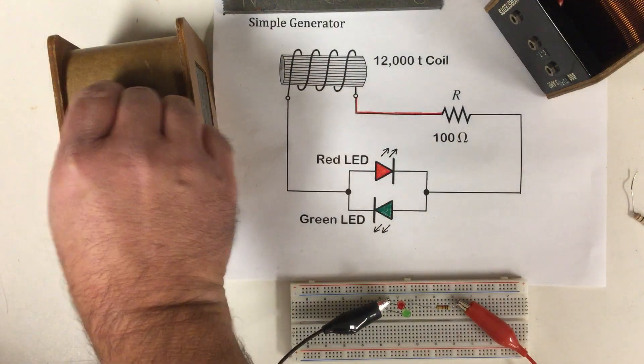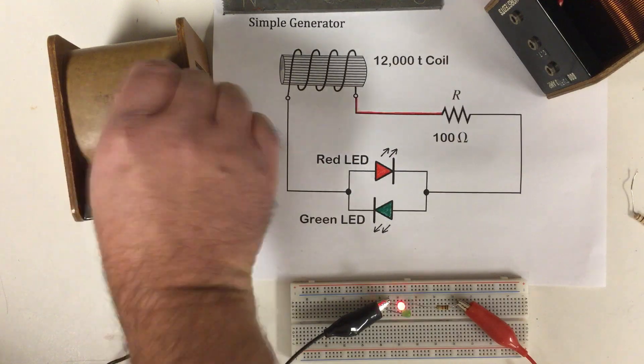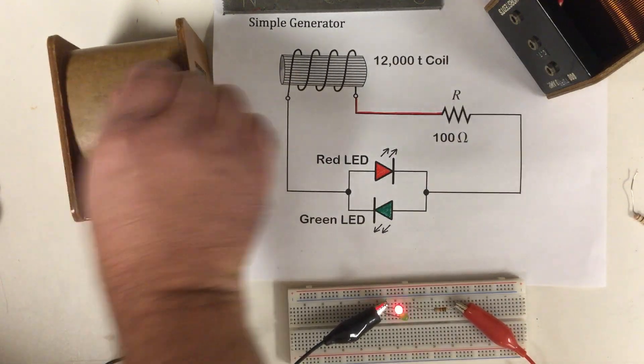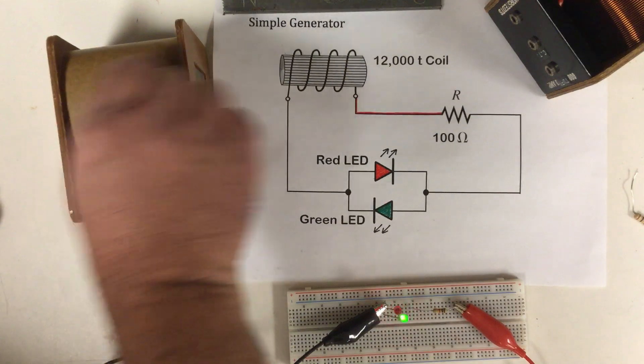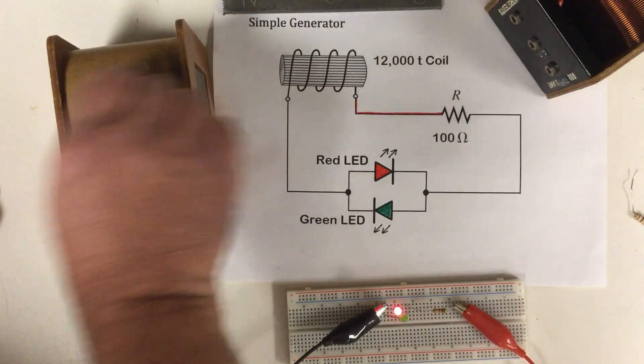If I go slow, I'll get some voltage. If I go fast, I put more pressure on the electrons to move farther. And so more electron pressure is more voltage.